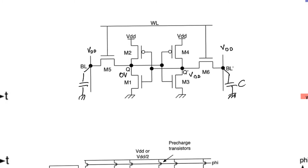Over here we're going to have CBL bar, and over here we're going to have CBL. Once pre-charging has been concluded, we can enable the cell by raising the wordline. This enables the transistors M5 and M6.